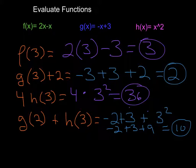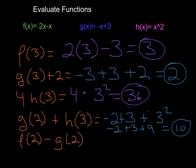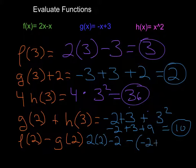Be careful. Let's do f of 2 minus g of 2 as another example. If you have a minus sign here, you have to subtract everything in the g of 2 function. So f of 2 becomes 2 times 2 minus 2, minus, and then in parentheses, negative 2 plus 3.